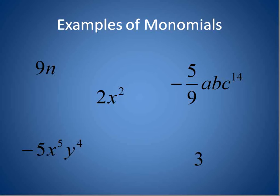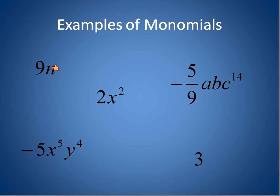Here are five examples of monomials. Notice this one here: 9N. Here's one even more simple: 3. It's the most simple type of monomial, just a number. You could also just have a variable, A. 3A — those are examples of monomials. They're just terms that have numbers or variables or a combination: 9N, 2x squared. When we start getting into having exponents, we have something else we need to look at.